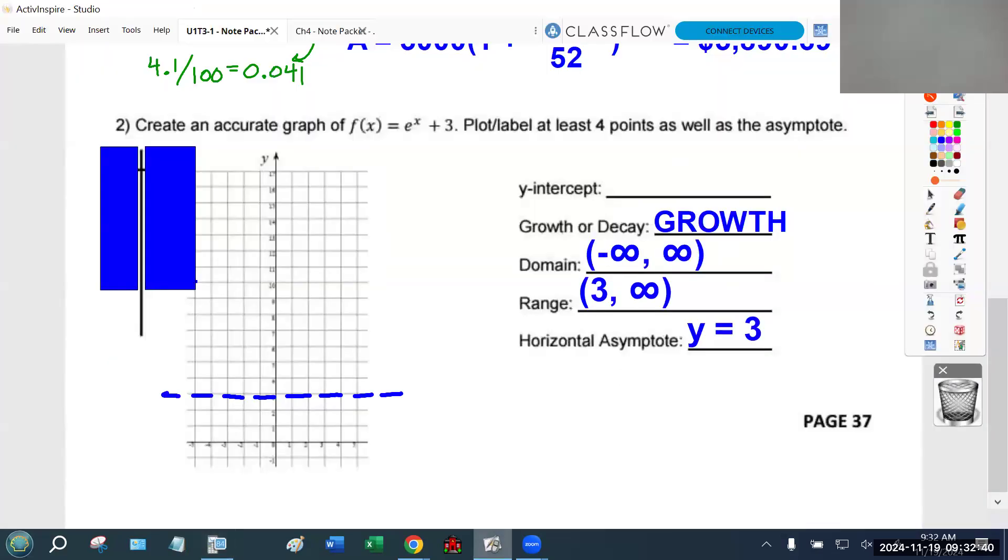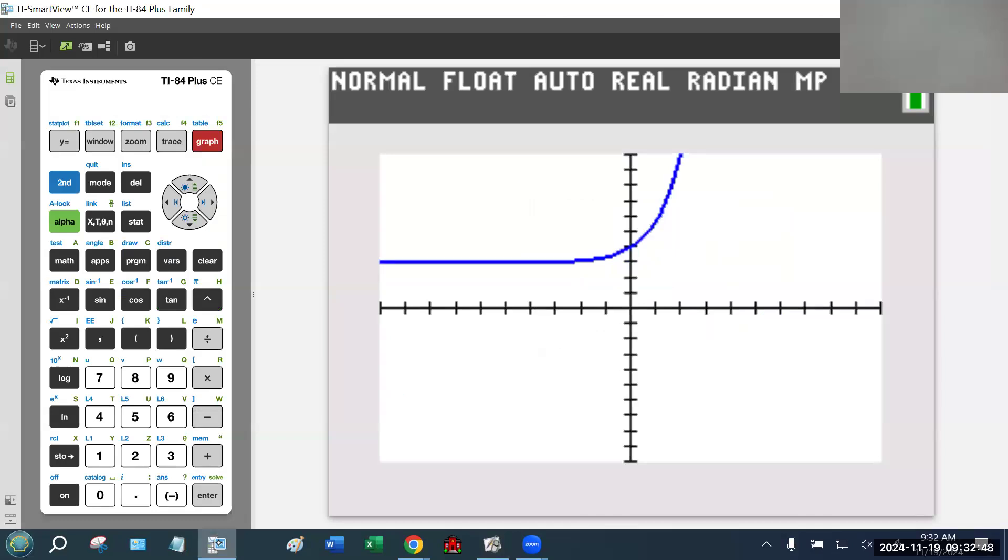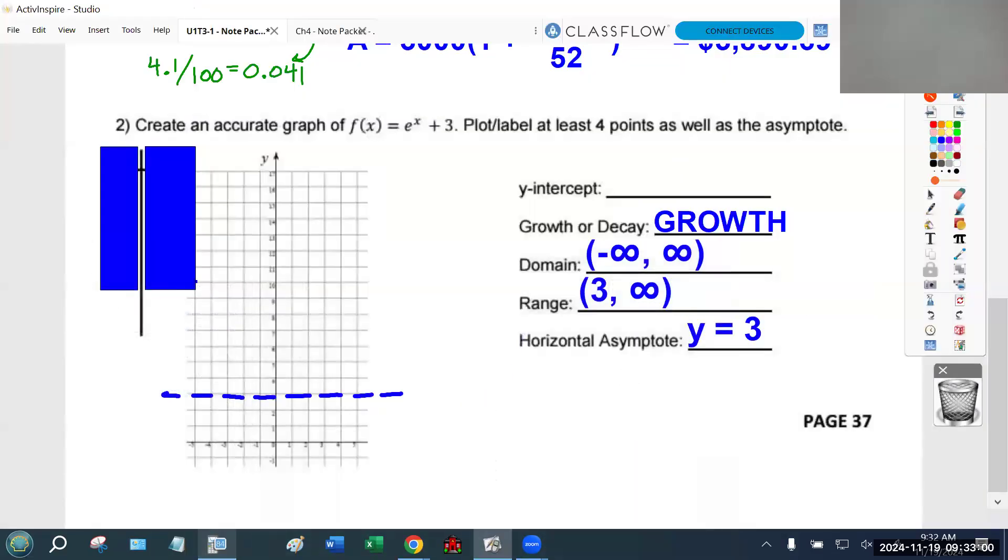Visually, you can see this function goes to the left forever and to the right forever. Now the only thing I haven't written down yet is the y-intercept. You have two different ways of getting it. Number one, you can see it - where does this graph hit the y-axis, folks? At four. So I could look at the picture and see this thing hits at (0, 4). But also, if I remember the y-intercept only occurs when x = 0, I can imagine plugging that in. e to the 0, what is anything to the 0? 1. So e to the 0 is 1 plus 3 is 4. When you plug in 0 for x, you get 4 for y.